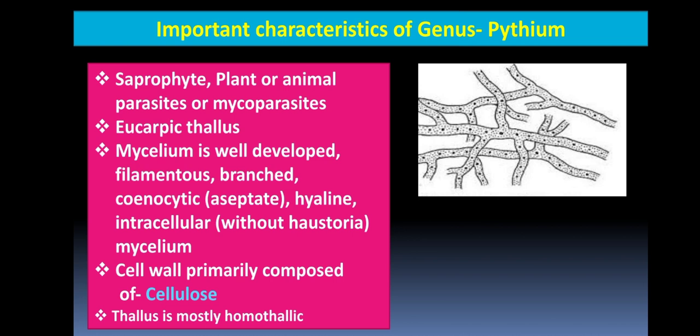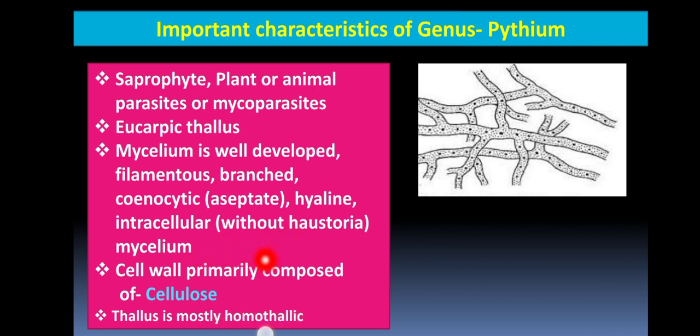Pythium produces intracellular hyphae, meaning the hyphae directly penetrate into living cells. It does not need any special structure like a haustorium. The cell wall is primarily made up of cellulose. The thallus is mostly homothallic, meaning both male and female reproductive structures are produced on the same thallus and can mate with each other, so a different strain is not needed.